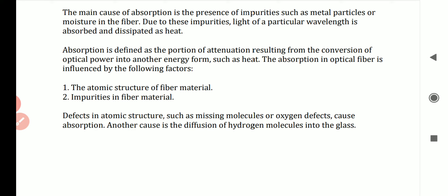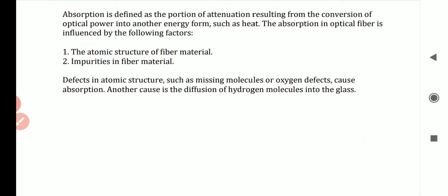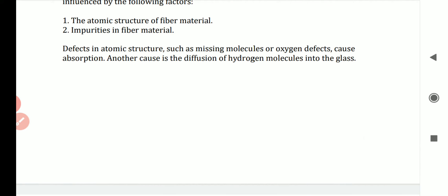Absorption in optical fiber is influenced by: the atomic structure of the fiber material, impurities in the fiber material, and defects in atomic structure such as missing molecules or oxygen defects. Another cause is the diffusion of hydrogen molecules into the glass during fabrication.